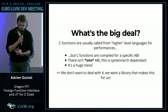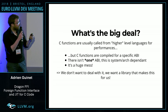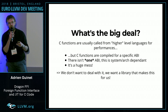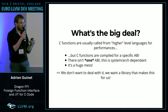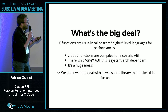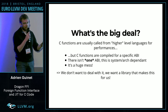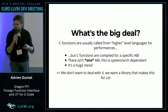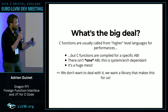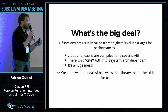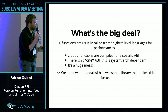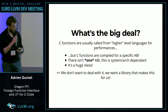Why is it difficult to do? Generally, we want to call functions from a higher-level language — either for performance reasons, or because we have a library that does what we want. But C functions are compiled for a specific ABI. There's no ABI in the standard; there's one ABI per system, per architecture. It's a really huge, complicated thing — you don't want to deal with it yourself.